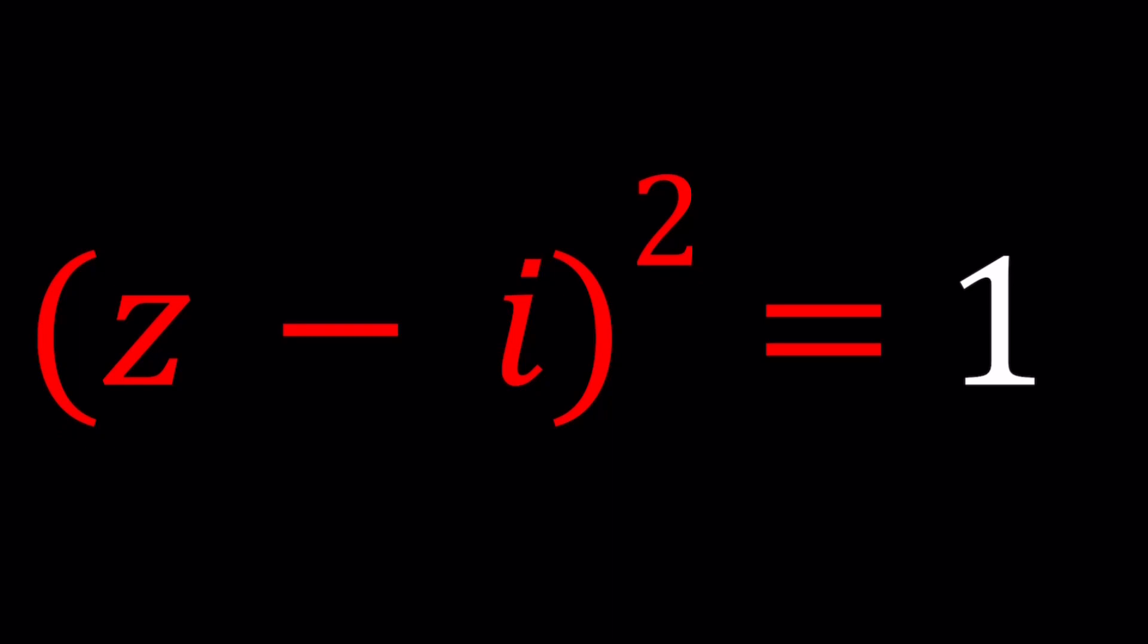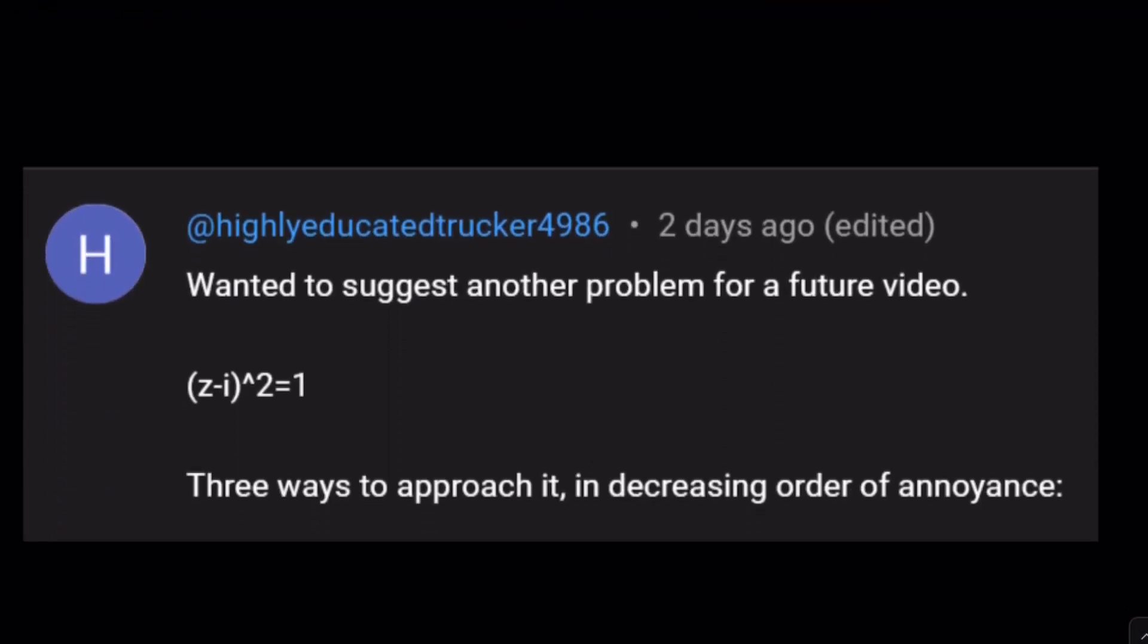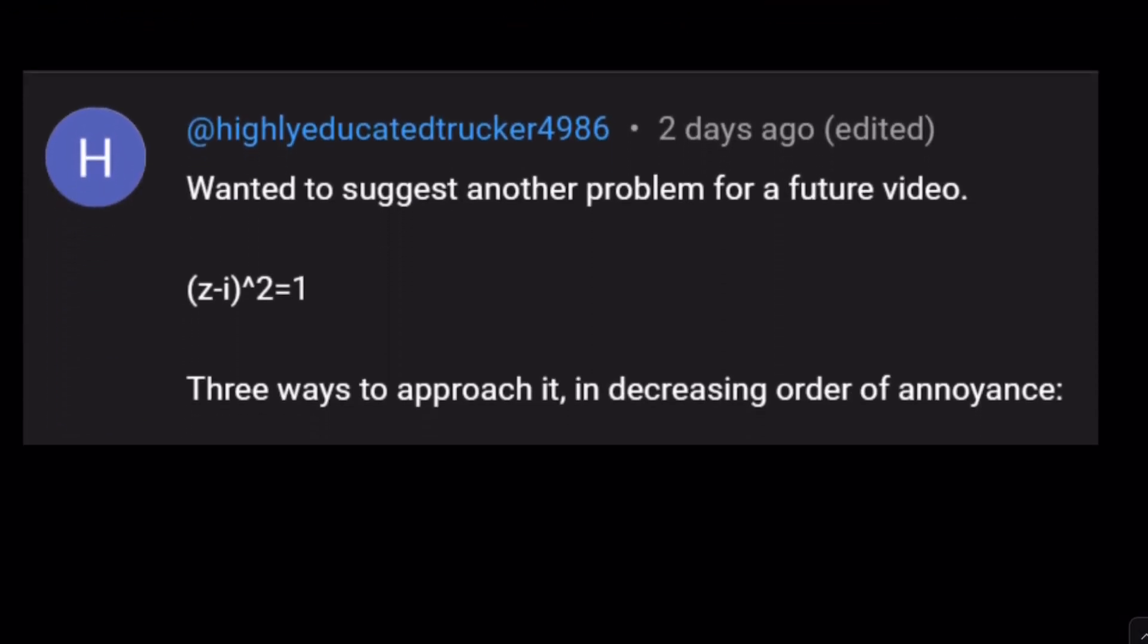In this video, we're going to be solving a very nice problem suggested by highly educated tracker. Thank you for your suggestions. I love them. So we have (z - i)² = 1 and we're going to be solving this problem in three different ways.